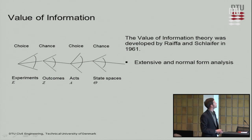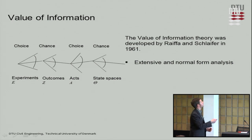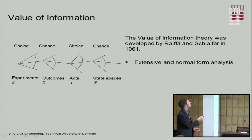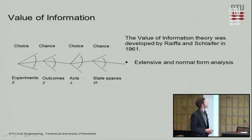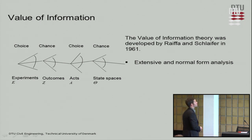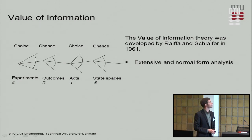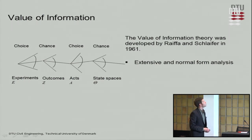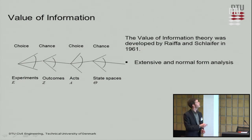Actions — for instance, structural integrity management actions — and the state spaces are associated with choices or decisions and chances, which represent probabilistic outcomes. We have an extensive and normal form analysis, describing how we calculate this decision tree from left to right or right to left.